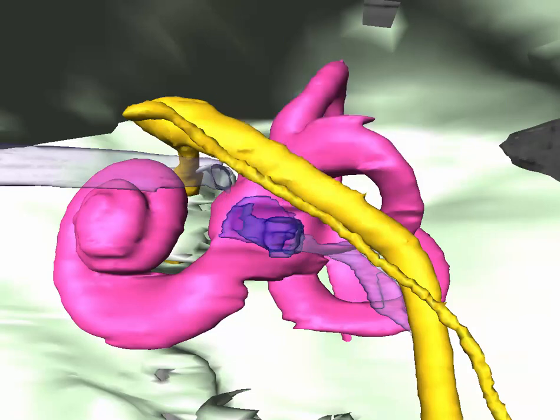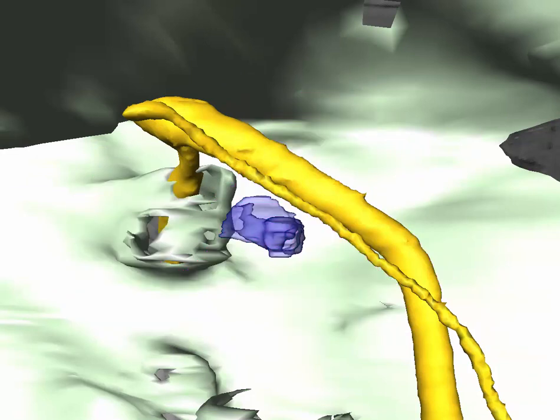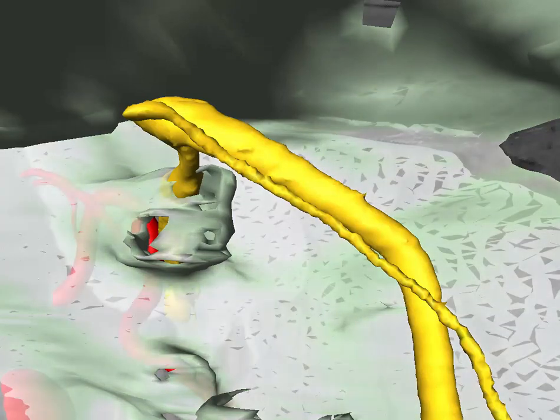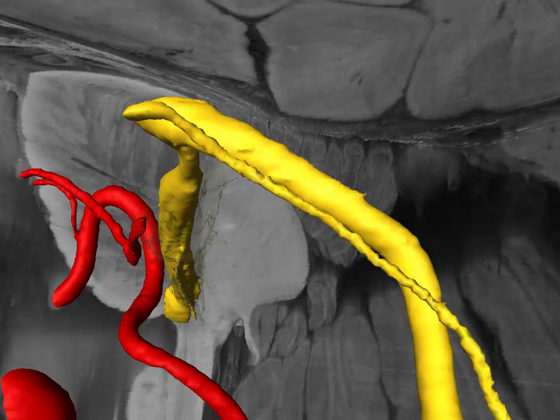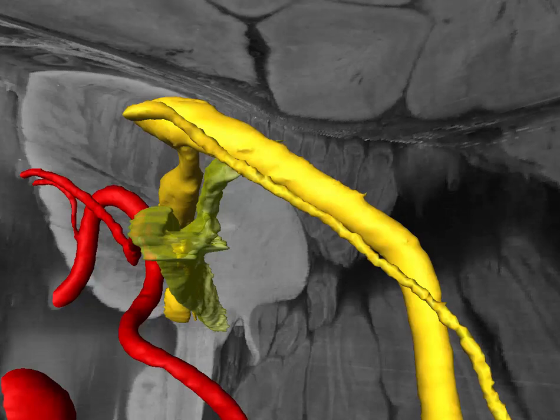As we take away the structures of the middle ear, we see the dural envelope from which the labyrinthine segment of the facial nerve leaves the fundus of the internal auditory canal. Openings for the cochlear nerve, superior and inferior vestibular nerves can also be seen. We can see the ICA and the labyrinthine artery entering the IAC with the eighth nerve.